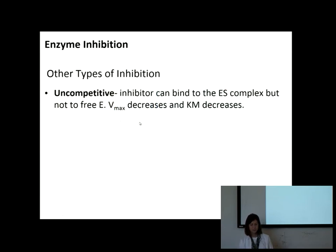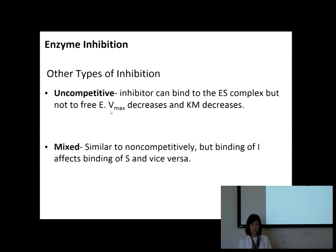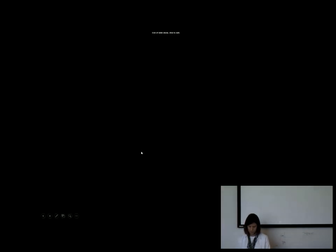There are other types of inhibition we won't study in detail. Uncompetitive inhibition involves an inhibitor that binds only to the enzyme-substrate complex, not to the free enzyme, and the enzyme cannot release the substrate as product. Increasing substrate increases the rate but never back to the original Vmax. This type is seen when an enzyme binds more than one substrate, and on the plot the slope remains the same but the line shifts. Mixed inhibition is more similar to non-competitive. We'll limit our discussion to competitive and non-competitive.